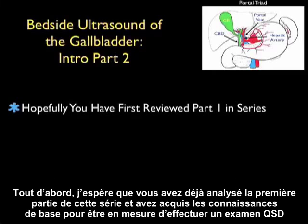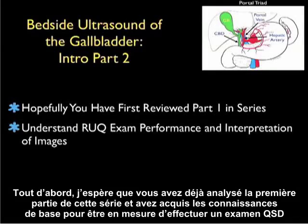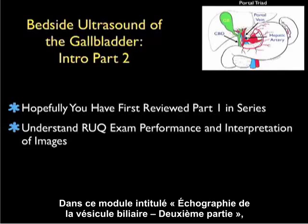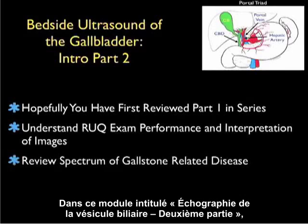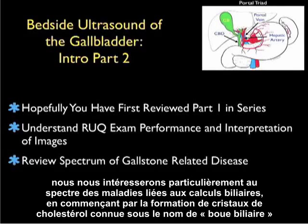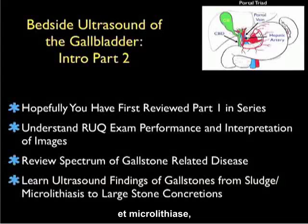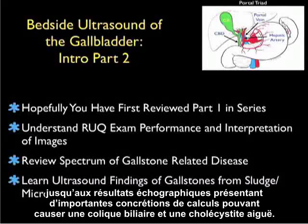Hopefully you've reviewed Part 1 in the series and have a basic understanding of how to perform the right upper quadrant exam and how to interpret the images you will obtain. In this module, Part 2 of Gallbladder Sonography, we're going to focus specifically on the spectrum of gallstone-related disease, beginning with the deposition of cholesterol crystals known as gallbladder sludge and microlithiasis, on to the ultrasound findings with large stone concretions that may cause biliary colic and acute cholecystitis.